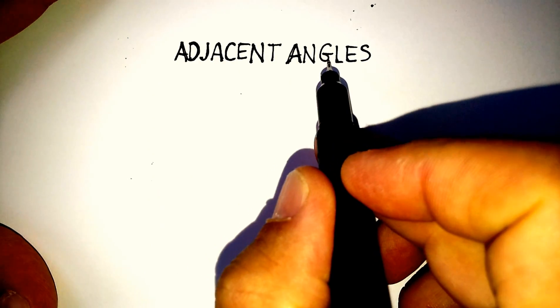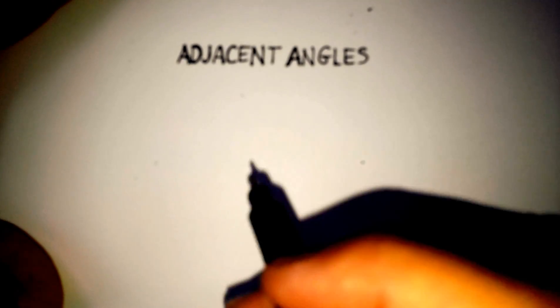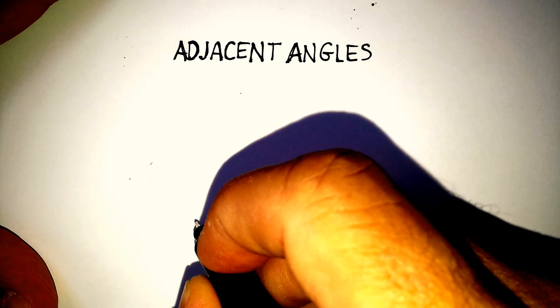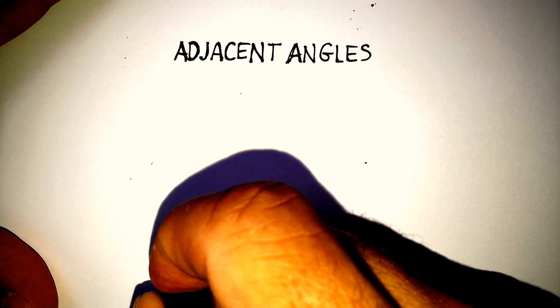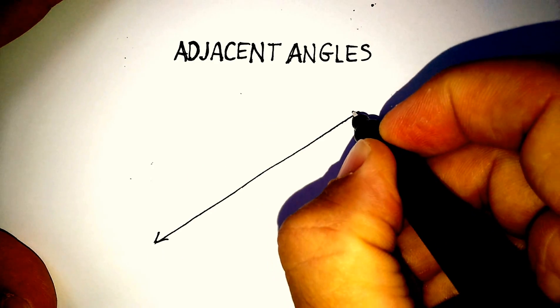In this video, we're going to talk about what are called adjacent angles. Let's think about what the word adjacent means. Adjacent means right next to one another. So if I were to draw a straight line, let's draw a couple of examples of adjacent angles.